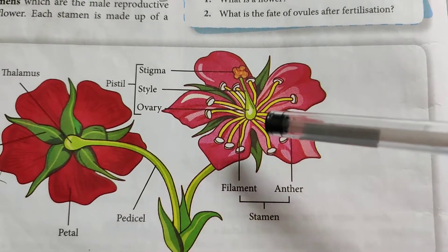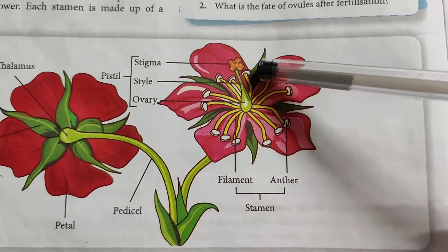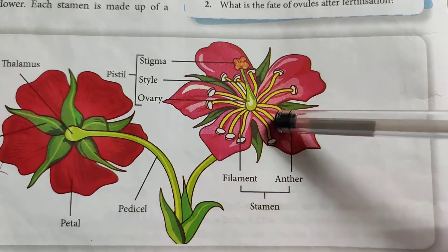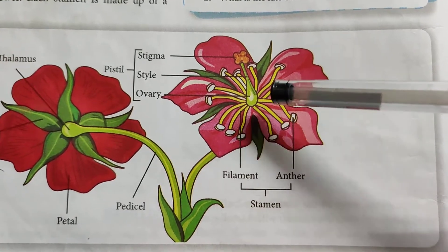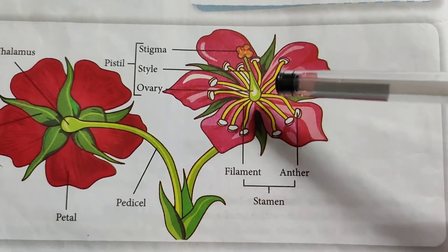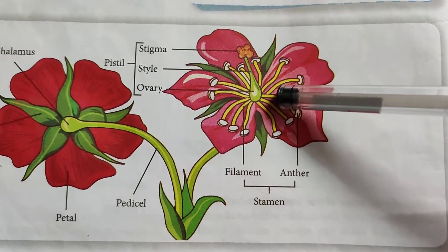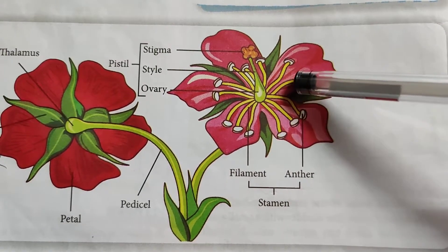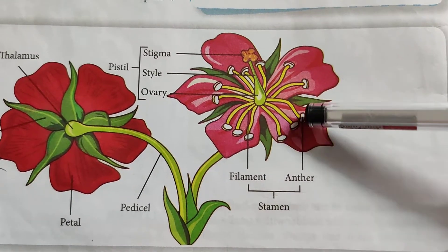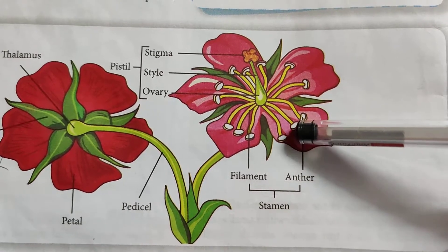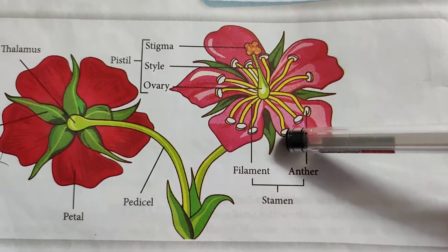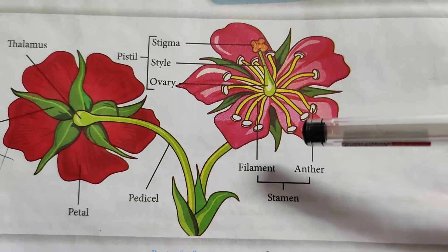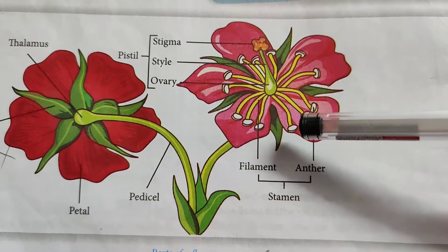The third whorl — you can see these yellow structures. This whorl is called androecium. It is the male reproductive part of the flower. It is made up of a filament and anther. Anther produces pollen grains. Pollen grains contain the male reproductive cell of the plant.